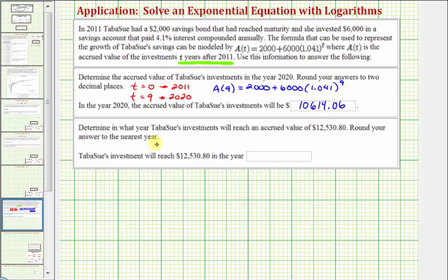Now we want to determine in what year Tabasoo's investment will reach an accrued value of $12,530.80. And we're asked to round to the nearest year. So now we're given the value of A(T), which equals 12,530.8. We want to determine the value of T or the input that would give us this output or this function value.